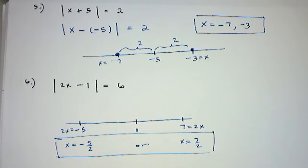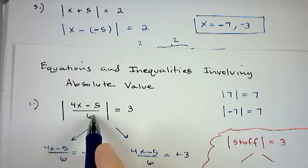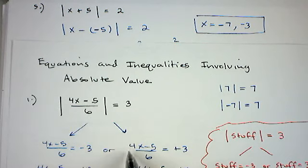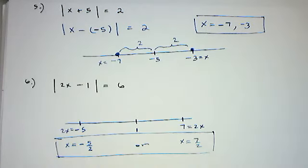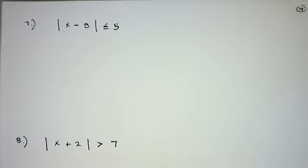For more complicated absolute value equations — like the first example with multiple operations — I don't usually try to think in terms of distance; I just use the cover-up method. But for a simple absolute value equation, the distance interpretation is always a good option.